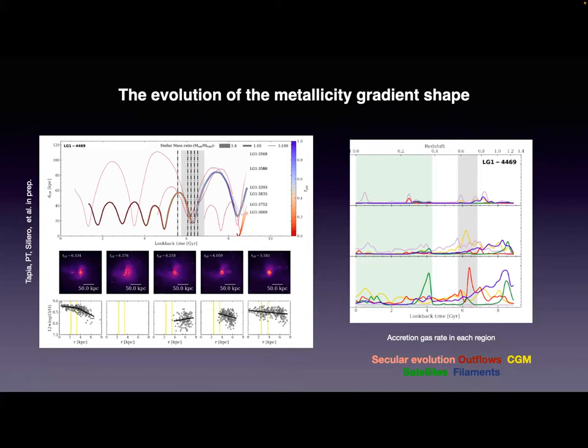The other project we have in mind is to compare simulations with observations on a fairer basis. Observers use some calibrator or metallicity indicators to transform or estimate abundances. When comparing simulated results with observations, we are not exactly comparing the same thing — we estimate gas in condition to form stars as HII regions (cold and dense gas with a high probability of forming stars), but it is not actually an HII region.